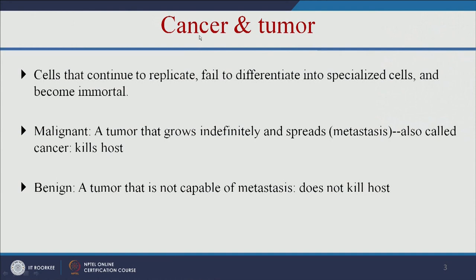Let us see what is the difference between cancer and tumor. The cells that continue to replicate and fail to differentiate into specialized cells and become immortal — this is called cancer cells or tumor cells.